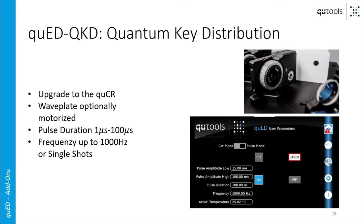The last of our Q-Add add-ons is the Q-Add QKD, our quantum key distribution add-on, which is basically an upgrade to the QCR control unit. We insert the pulsed laser option between the laser driver and the laser so that we can pulse the pump laser, which leads to weak coherent pulses of single photons. Those can be used for a real quantum key distribution experiment like the BB84 protocol. You also get a wave plate so that Alice can rotate her polarization state, and you can use one of the polarizers for Bob's polarization analysis setup. The pulse duration can be set between 1 microsecond and 100 microseconds, with frequency up to about 1000 hertz — a thousand pulses per second — or single shots by the press of a button.